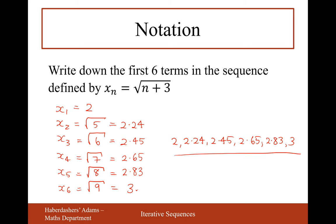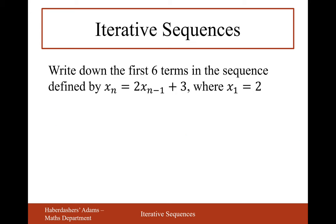Now we get on to iterative sequences - we've just been playing around with basic sequences so far. This is the big stuff - iterative sequences where we really have to start using some difficult formulas. Write down the first six terms in the sequence defined by xₙ = 2xₙ₋₁ + 3, where n minus 1 is all one big subscript on the x. In this sequence, we get the first term for free: x₁ = 2.